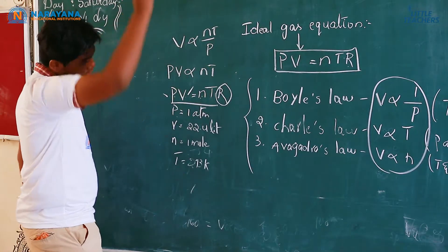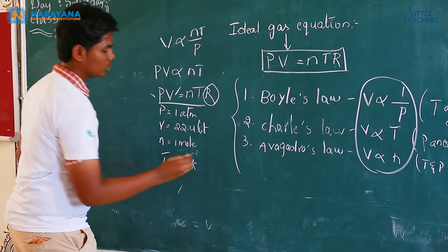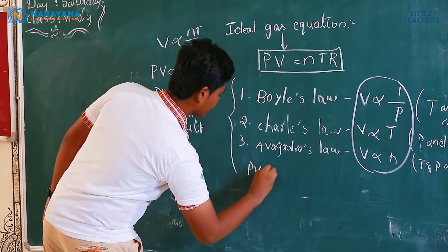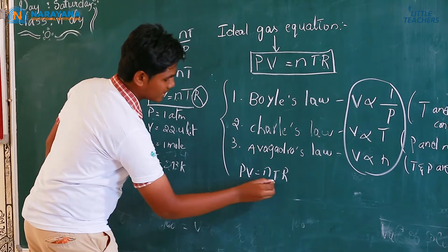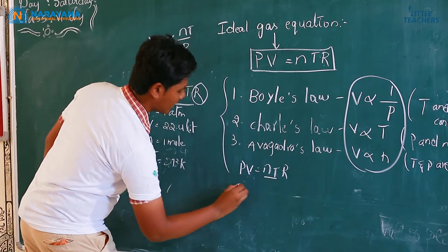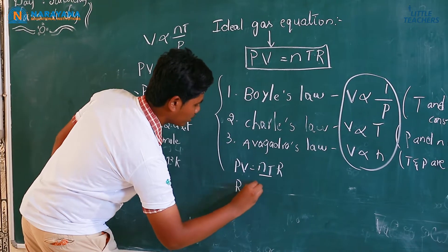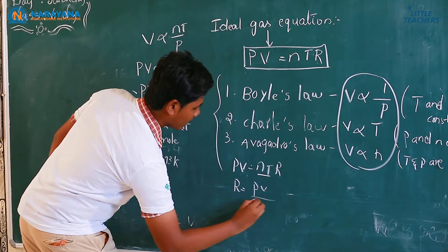We have the formula, PV is equals to NTR. Now, we need the value of R. Then, send these two to the other side. R equals to PV by NT.